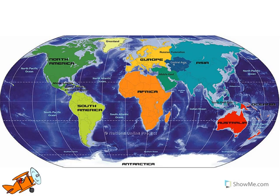Look at the world map. There are seven pieces of land, or seven continents, and four oceans. Oceans are large bodies of water. Let's look at the seven continents.